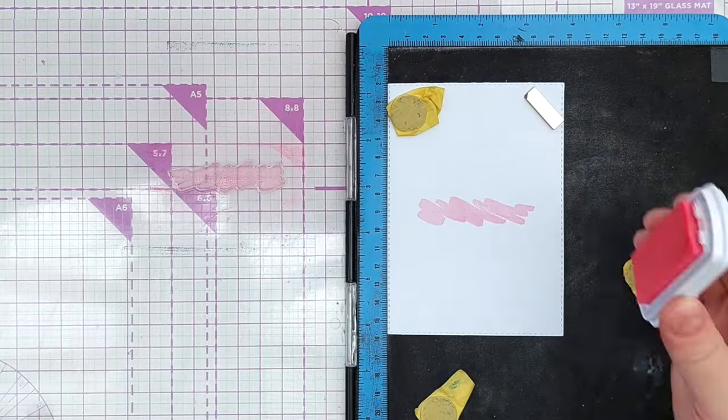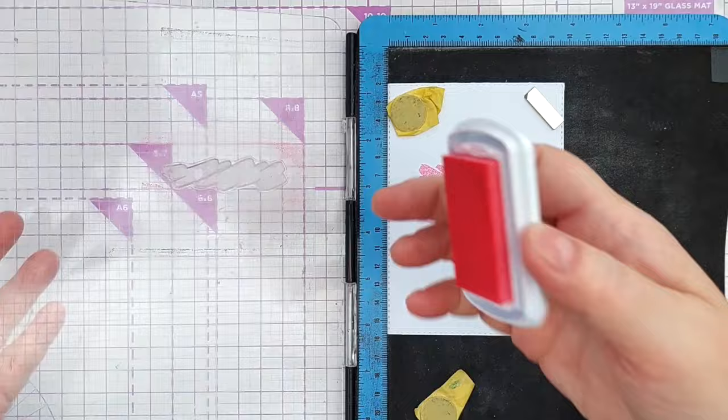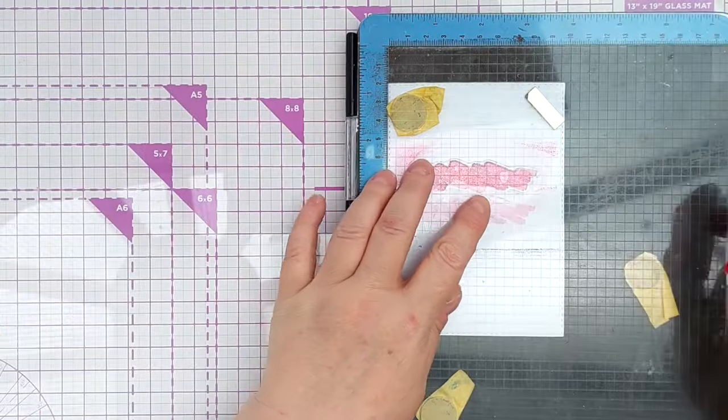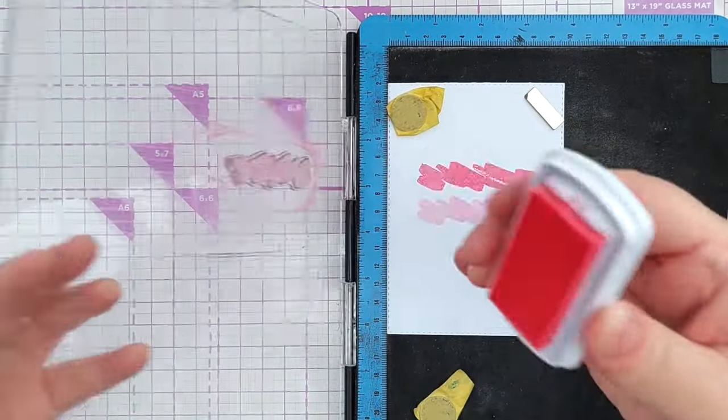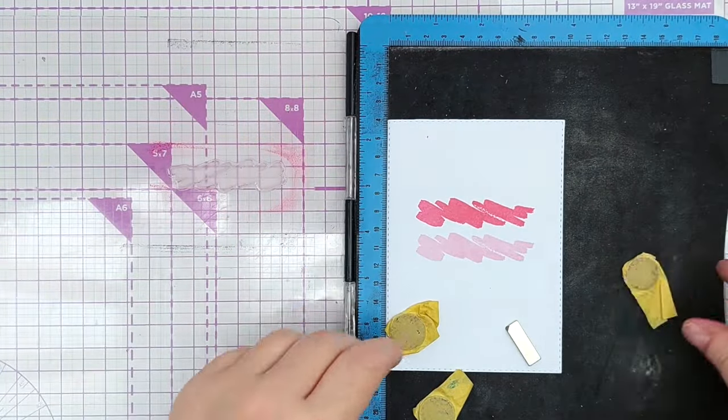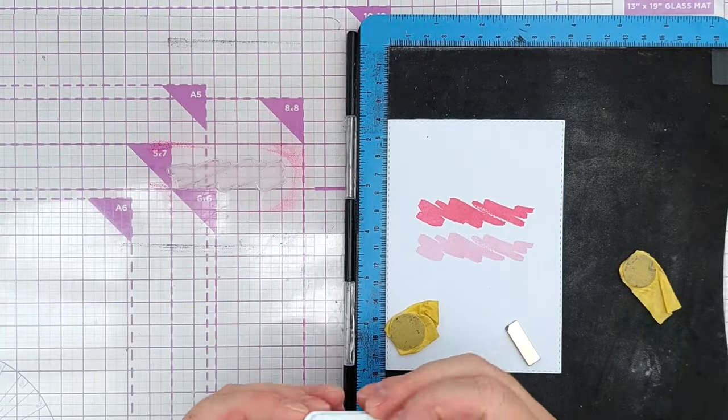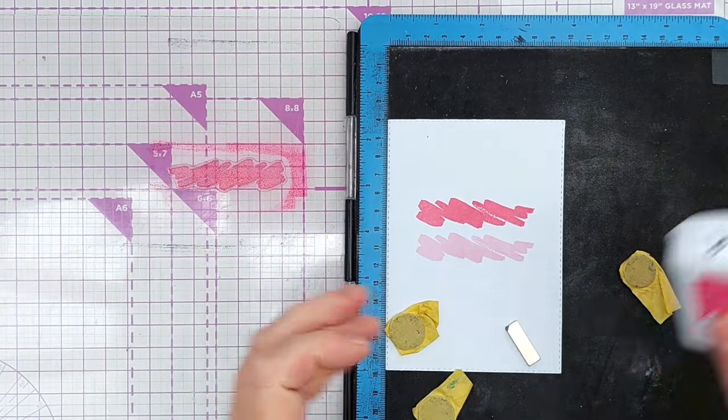That's almost an inch and then stamped the swipe again in It's a Girl which is a medium saturation pink. Again I did that three times to get good coverage. And then I moved my panel down another two centimeters and stamped three times in Party Dress which is my strongest red that I have in the Catherine Pooler collection.